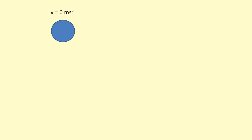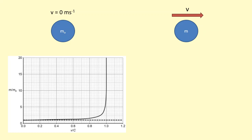In this video we'll be looking at the mass and energy of particles. Here we have a particle at rest and its mass is m-naught, which is called the rest mass. Here we have a particle which is moving, and to us it will appear that the mass of this particle is larger — the faster it moves, the larger its mass will appear to us. Here's a graph showing the mass against the velocity of the particle, where velocity is given in multiples of the speed of light.